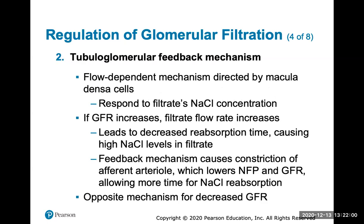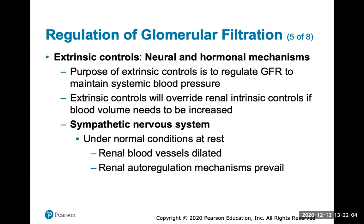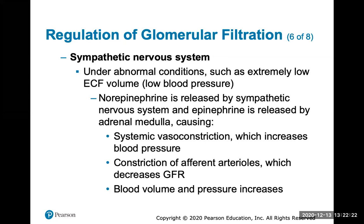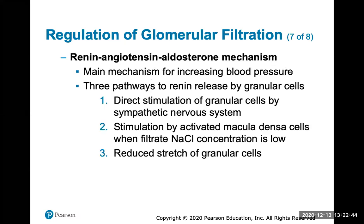Extrinsic controls are neural and hormonal mechanisms that override renal controls when blood volume needs to be increased via the sympathetic nervous system. Under normal resting conditions, renal blood vessels are dilated and autoregulation mechanisms prevail. Under abnormal conditions such as extremely low extracellular fluid or low blood pressure, norepinephrine is released to vasoconstrict the arteries. Constricting the afferent arterioles decreases GFR, causing blood to remain in systemic circulation, which increases overall blood pressure. The renin-angiotensin-aldosterone mechanism is the main mechanism for increasing blood pressure.